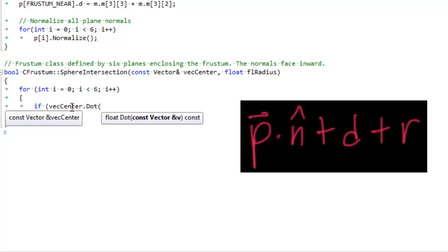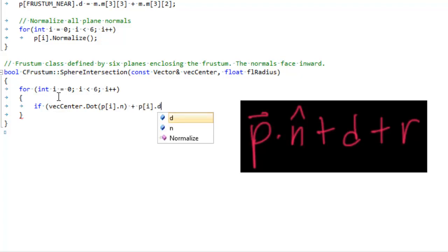So vex center is what was p in our math section. So p we're going to dot that with the normal of each plane. Notice that I'm doing this for loop. So I'm doing this operation for all six planes. And I'm going to add D to that, just like our formula says. And if this is less than or equal to zero, then our entity is outside of this plane. And so the sphere does not intersect with the frustum and therefore we will not render the entity.